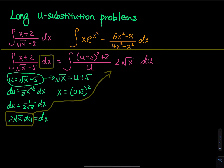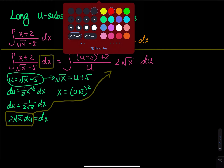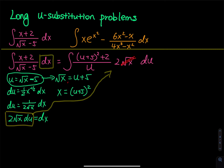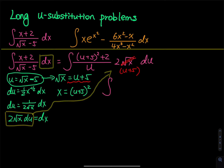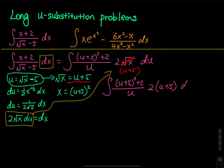You have differential du, which means u is the only variable, but you still have an x. So to get rid of that x, since root x equals u plus 5, you change root x to u plus 5. So the integral becomes: u plus 5 squared plus 2, divided by u, times 2 times u plus 5, du.